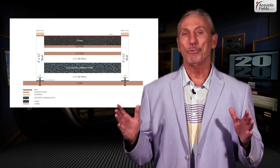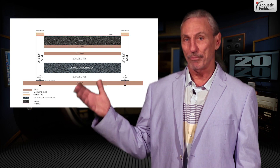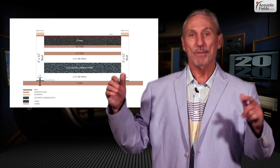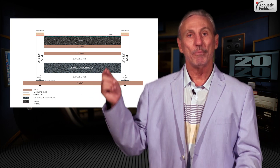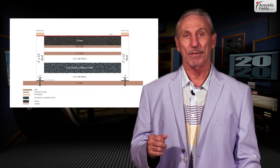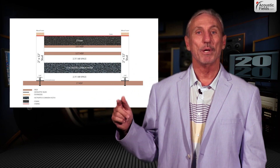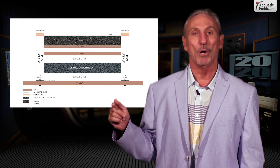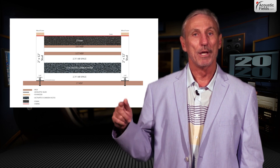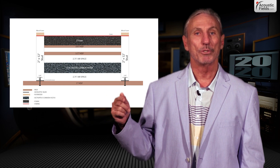We have three main parts to a diaphragmatic absorber: the front wall, the cabinet, and the internal cabinet fill. In this diagram you can see the cabinet and the two front walls, which are out of phase with each other. Those slow the low frequency pressure down.